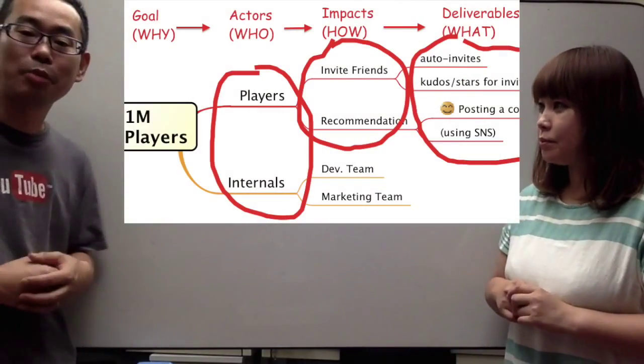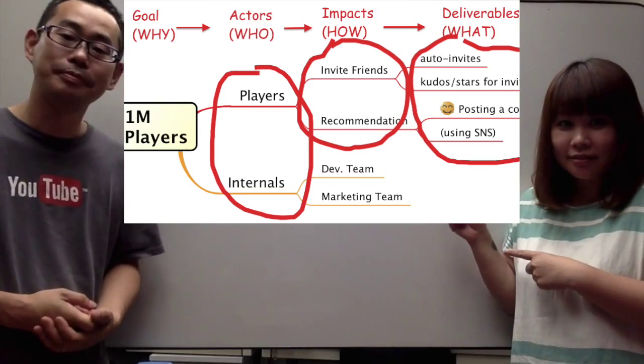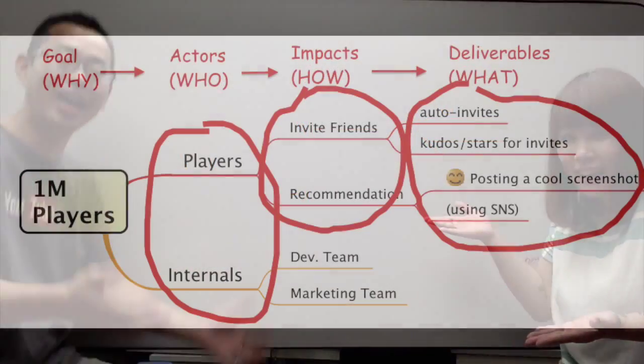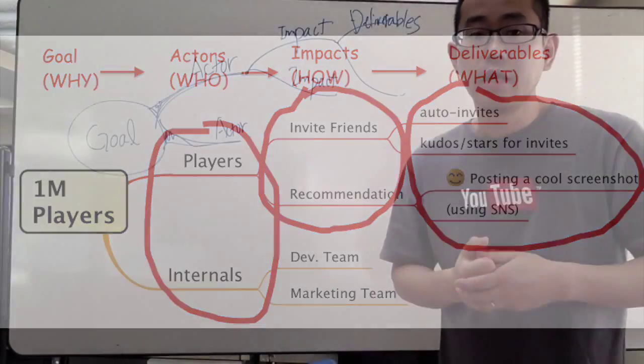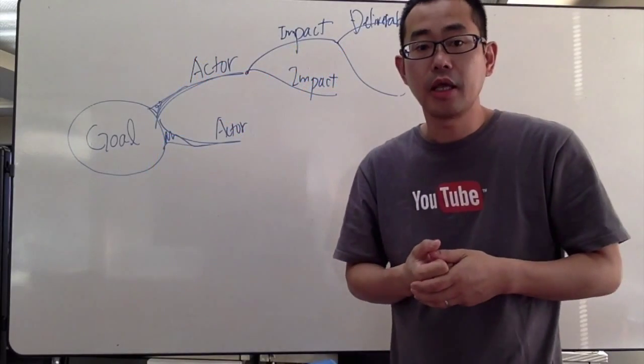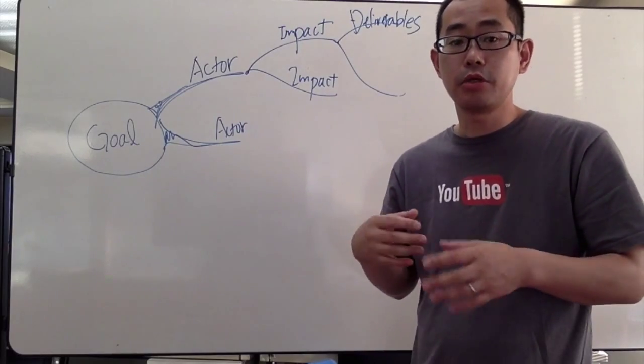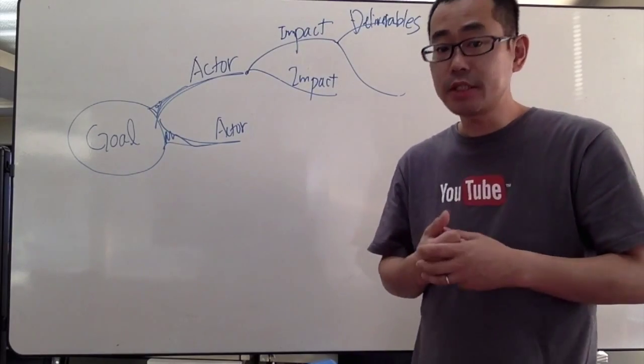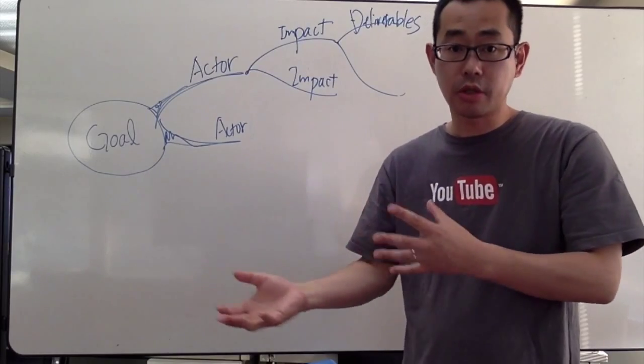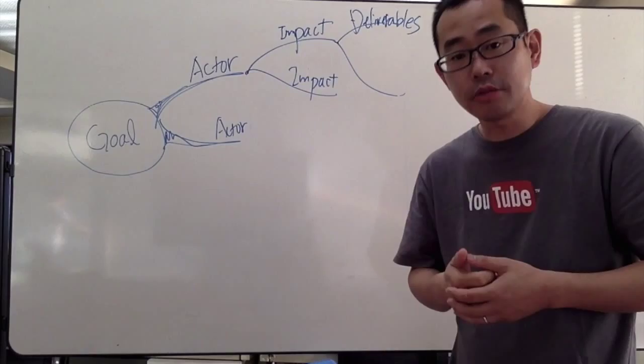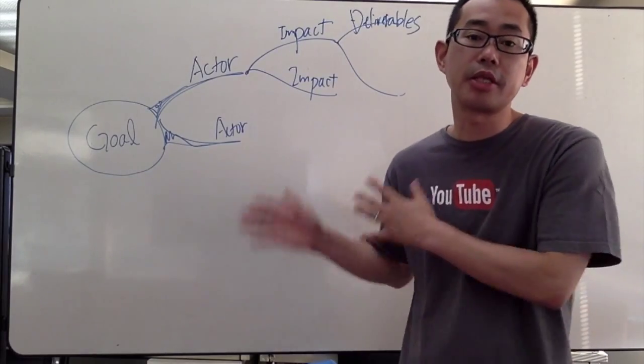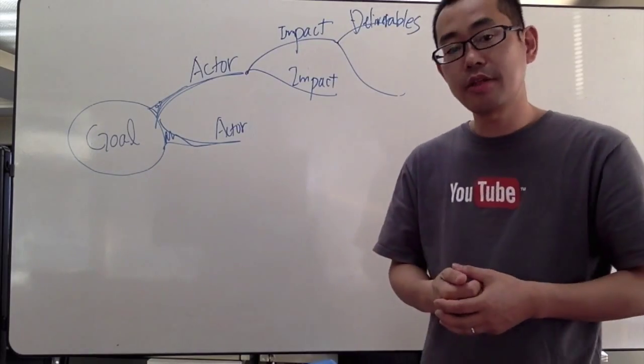I see. So this would be the impact map. If you are in the business side, this impact map also helps you communicate the business intentions to the development team. Next time, I'll show you how to create user stories or use cases from this impact map. Until then, see you.